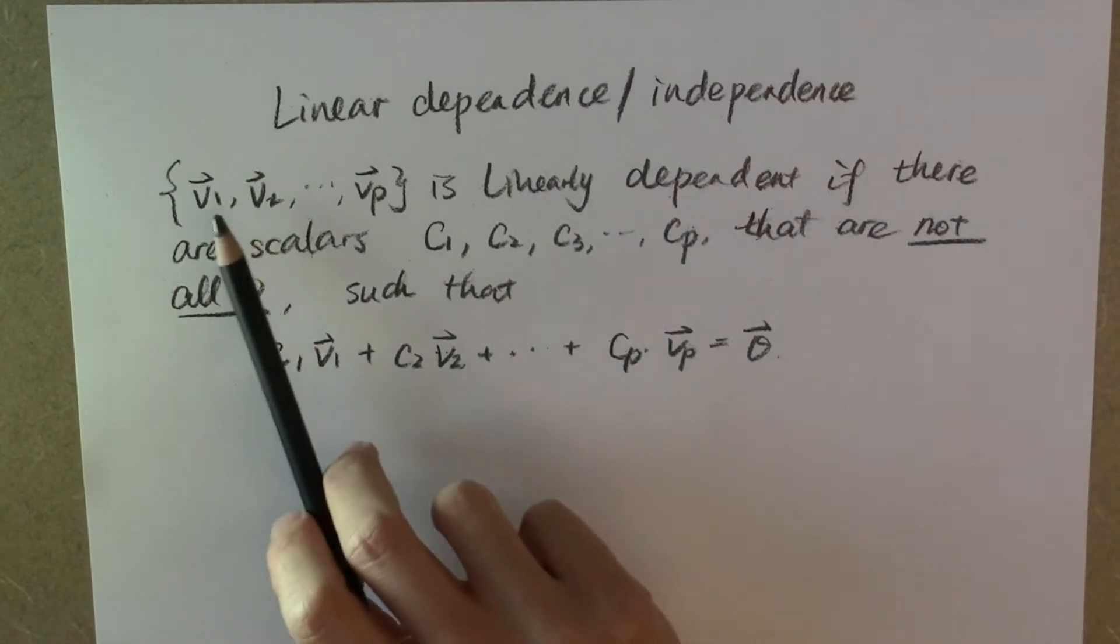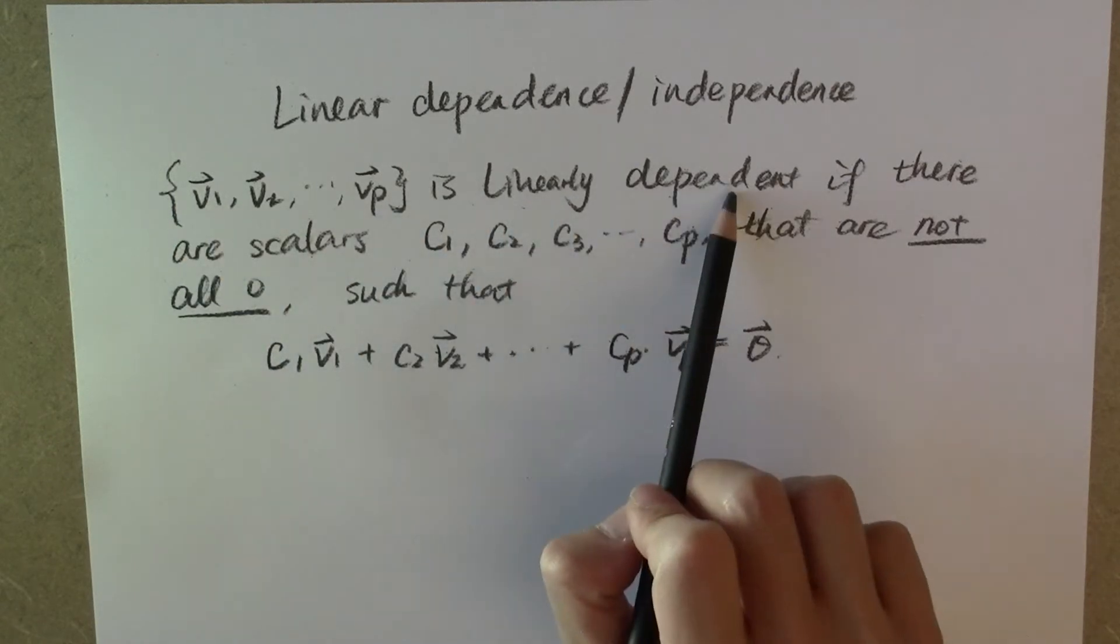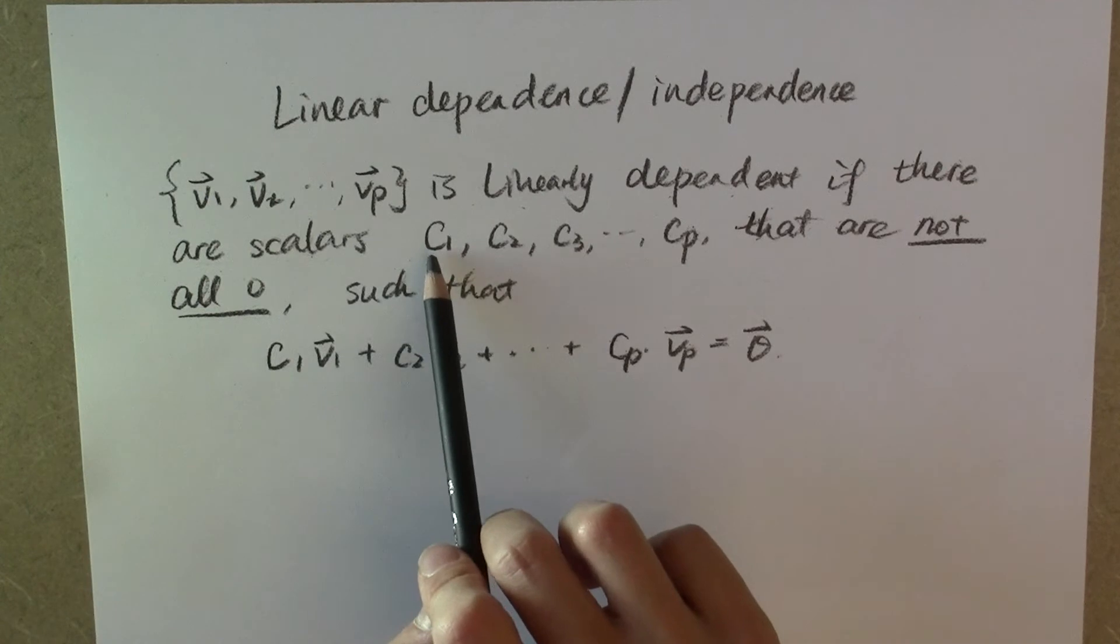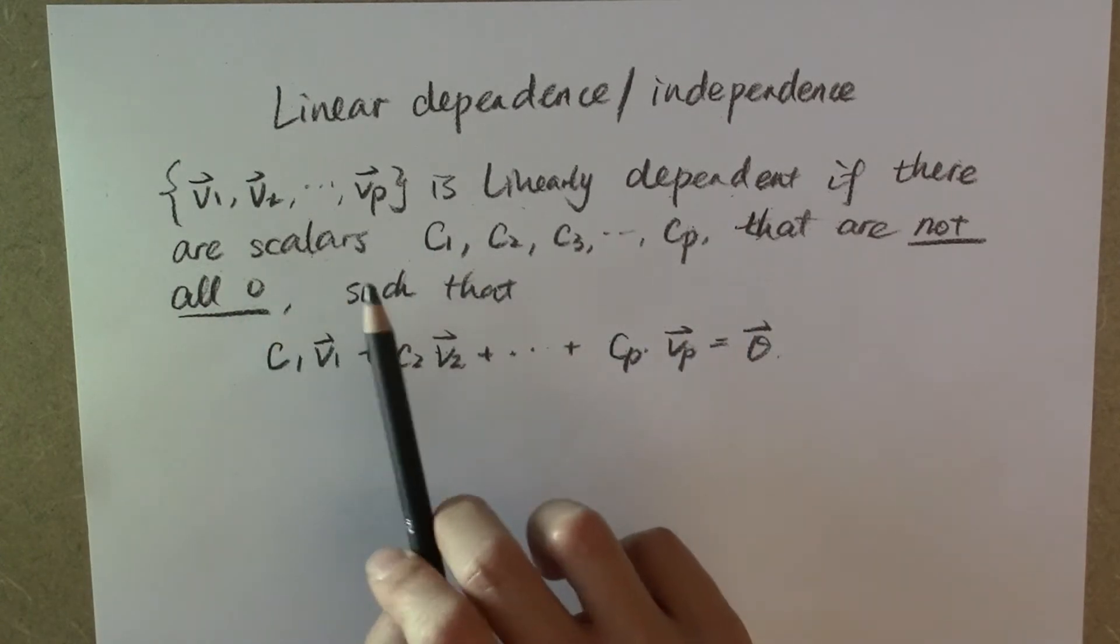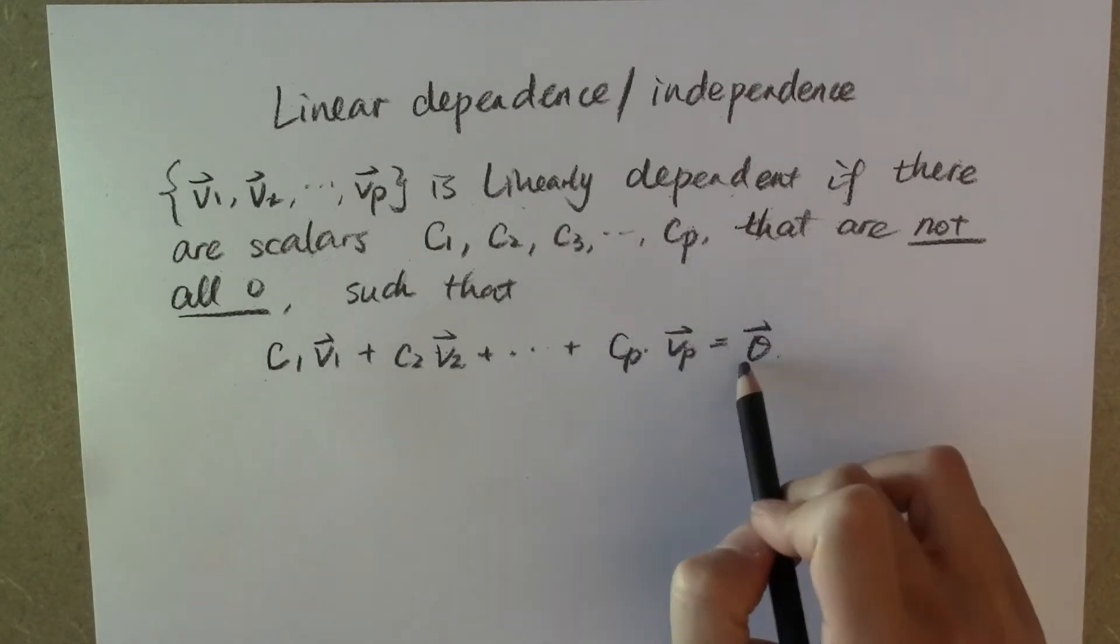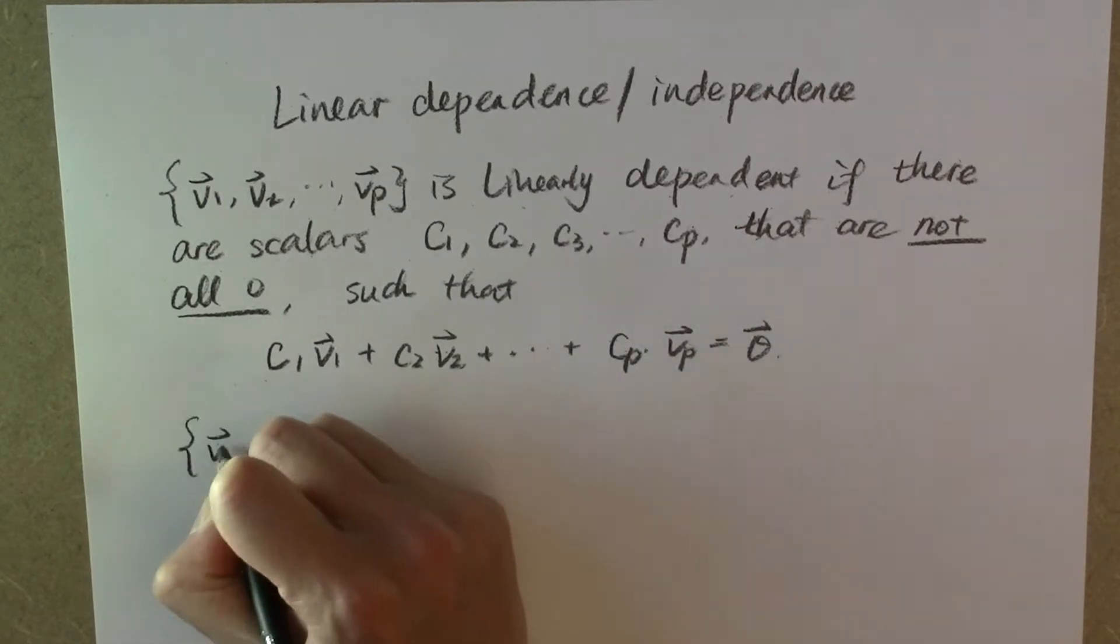So the set of vectors is linearly dependent if there is a set of scalars that are not entirely zero, such that the linear combination of these vectors with this set of scalars equals the zero vector.